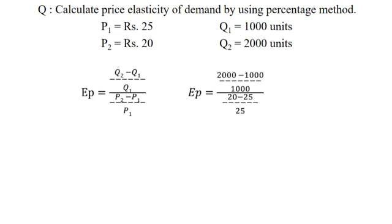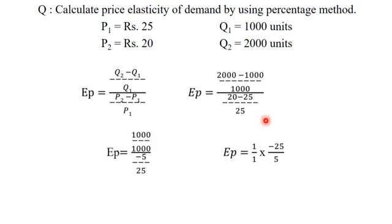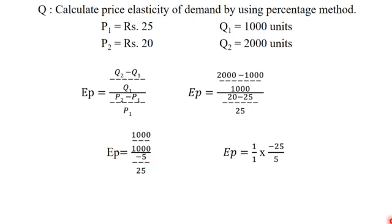2000 minus 1000 is 1000, divided by 1000, whole divided by 20 minus 25 which is minus 5, divided by 25. Taking the reciprocal, we get 1 divided by 1, into 25 divided by minus 5. So the elasticity of price is equal to minus 5. This is the calculation.